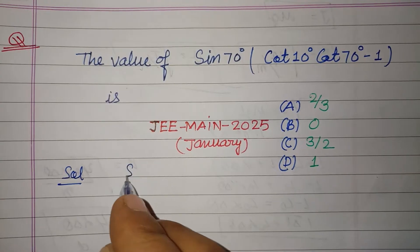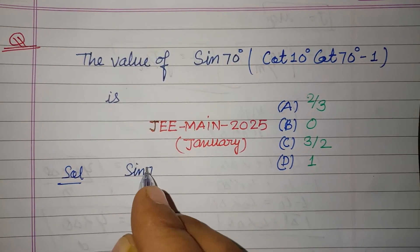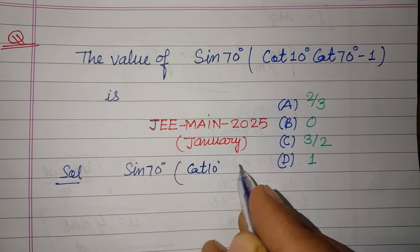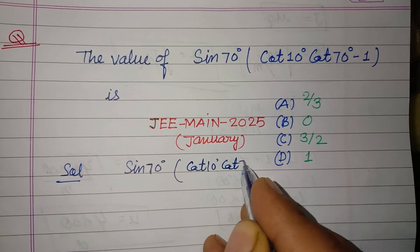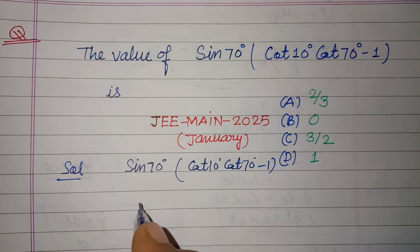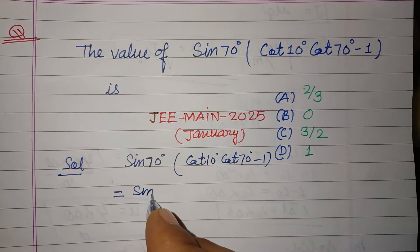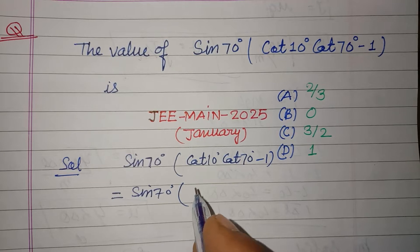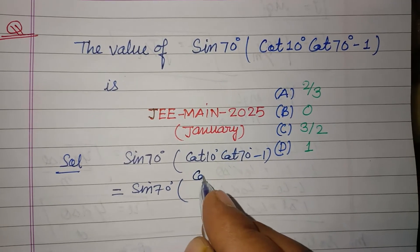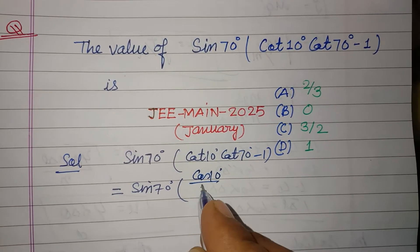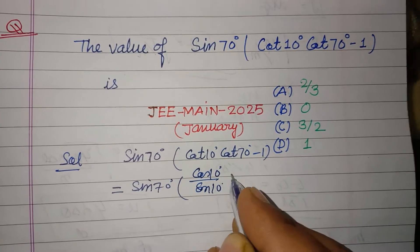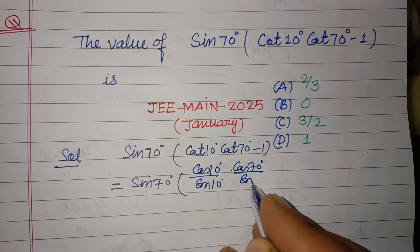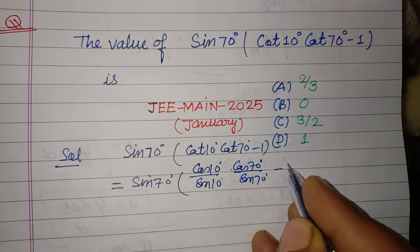This question is based on trigonometry. We have sin 70 times cot 10 times cot 70 minus 1. We convert cot into cos over sin: cot 10 becomes cos 10 over sin 10, and cot 70 becomes cos 70 over sin 70, giving us sin 70 times (cos 10 over sin 10) times (cos 70 over sin 70 minus 1).